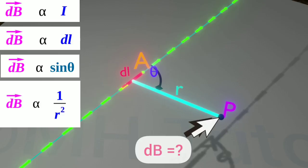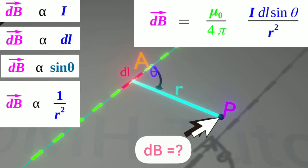And dB is inversely proportional to the square of R. Summing up all these, we get the complete scalar form of Biot-Savart law. Which is dB equals mu zero by four pi into I DL sine theta by R square.